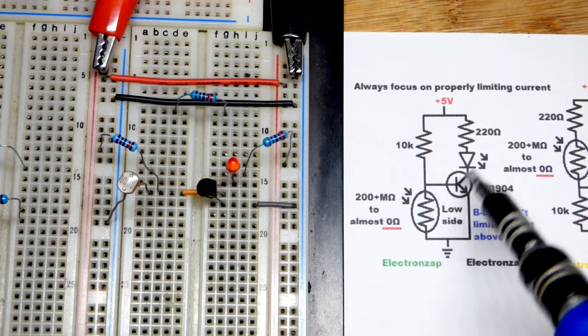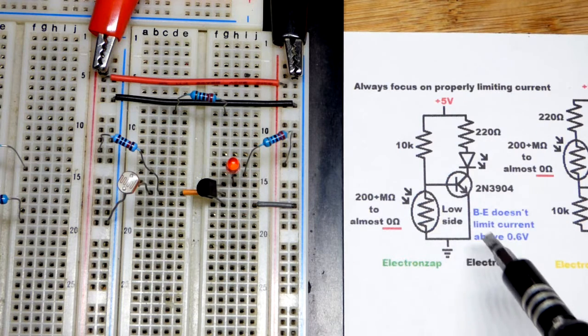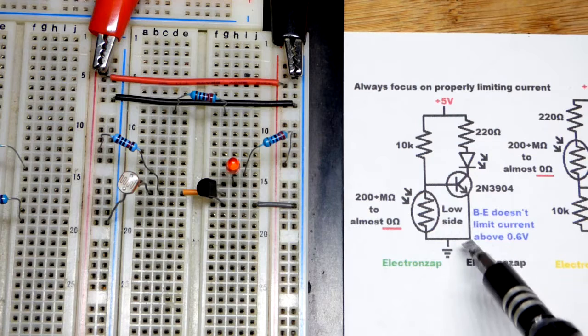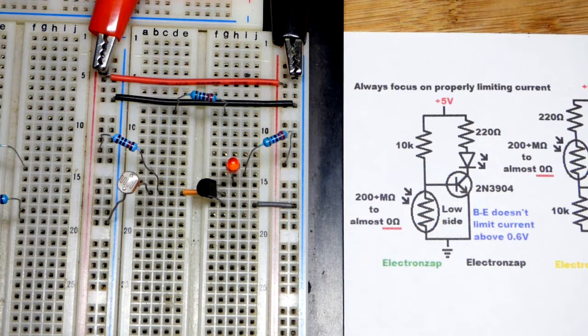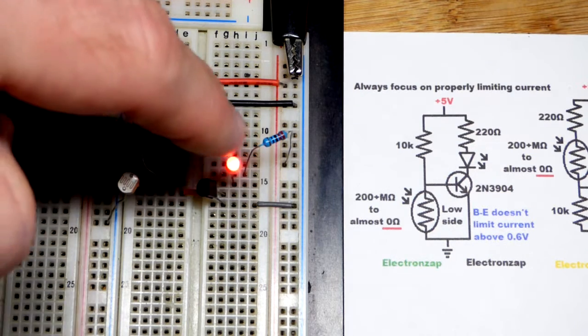A little bit of current gets a lot more current to flow through, and so it doesn't take a lot from base to emitter to get it to conduct fully. So hopefully that makes sense, hopefully you can see everything right there.